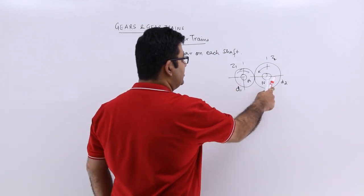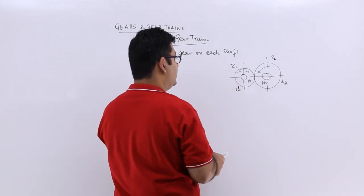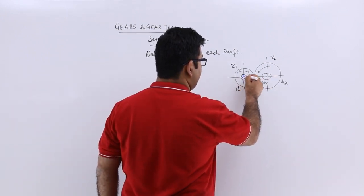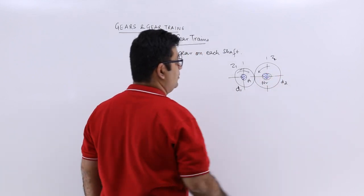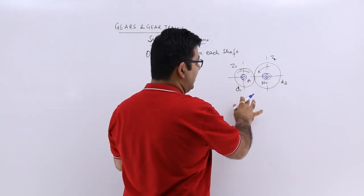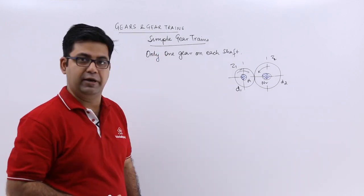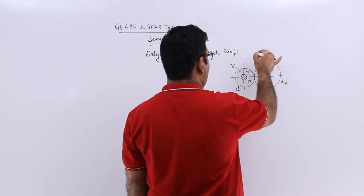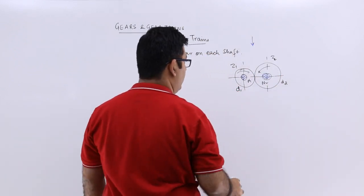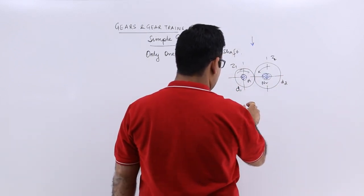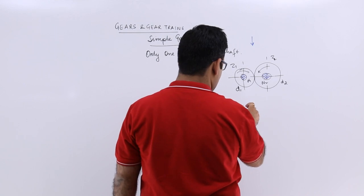You have two parallel shafts. This is the first shaft, this is the second shaft, both are parallel and on each shaft you have just one gear. So it becomes a simple gear train. If you look at it from the top, you will get a gear like this.